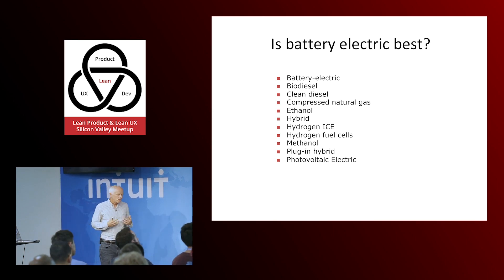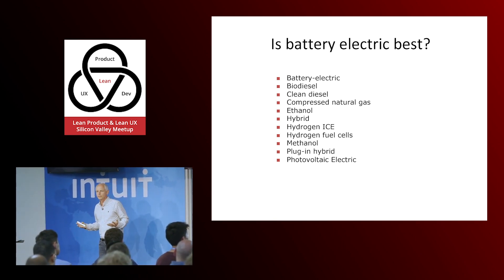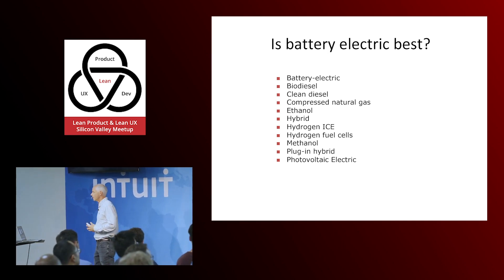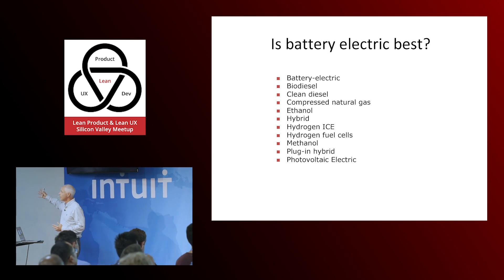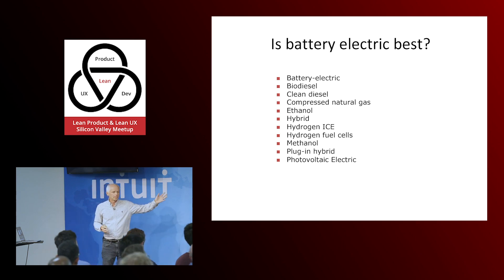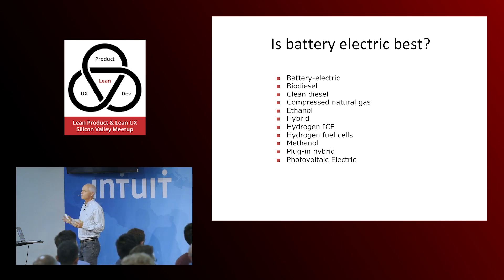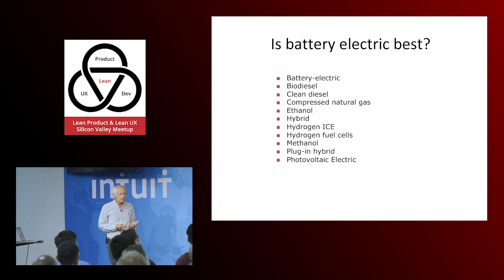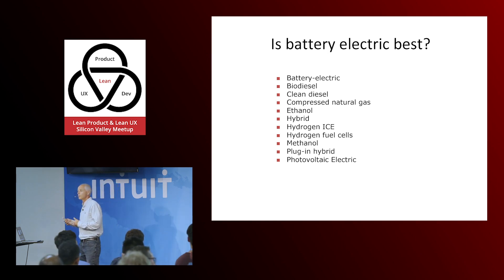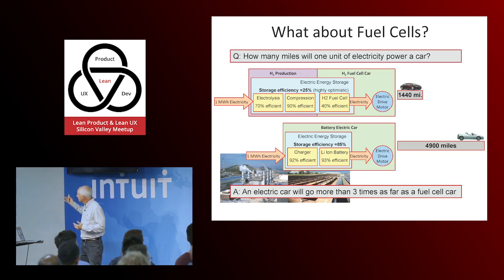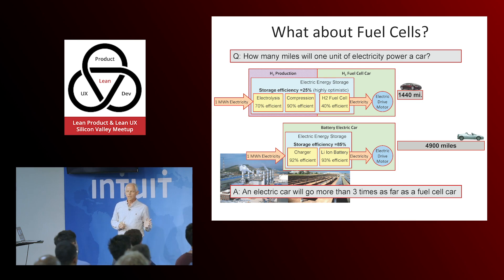Our intuition was that a battery electric vehicle was going to be the answer to reduce oil consumption. But there are a lot of ways of reducing oil consumption — various kinds of hybrids, biodiesels, ethanol, and hydrogen fuel cells. So we researched every single one of those fuels quite deeply, looking at where the energy came from and how efficient it was, to make sure battery electric was going to be the answer.